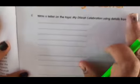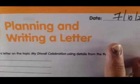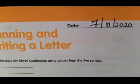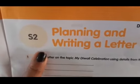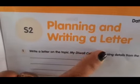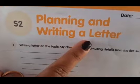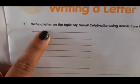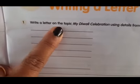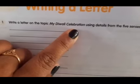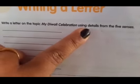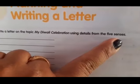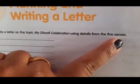Write today's date: 7th October 2020. See, S2 - Planning and Writing a Letter. Now the first bit: write a letter on the topic 'My Diwali Celebration' using details from the 5 senses.